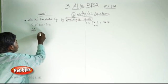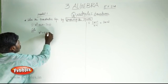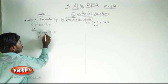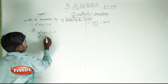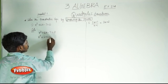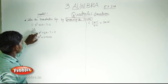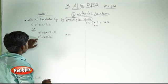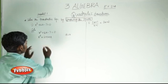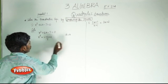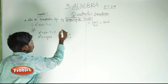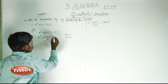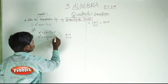Now x squared plus 6x minus 7 is equal to 0. Then x squared plus 6x is split as 2 into 3 into x. Here a squared, where a is equal to x, gives a squared plus 2ab where b is equal to 3. We want a squared plus 2ab plus b squared, and b squared is 3 squared.